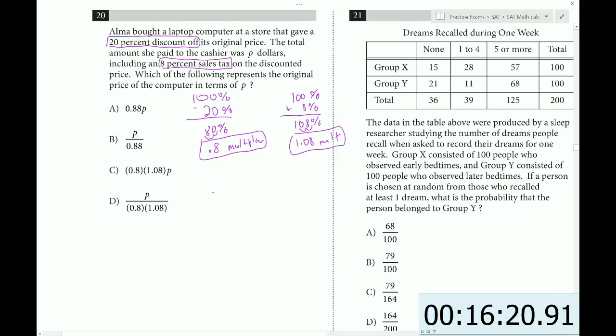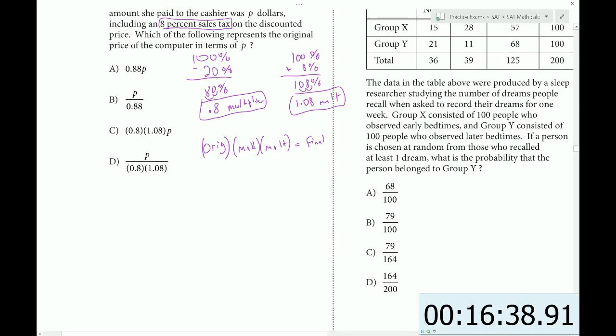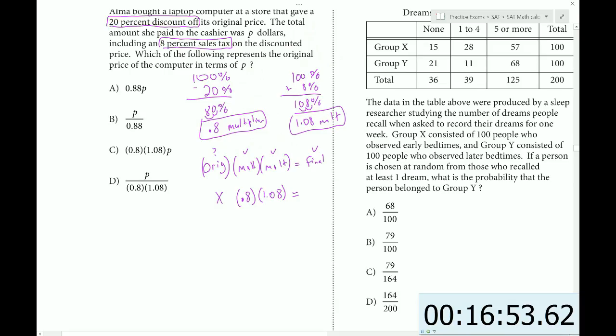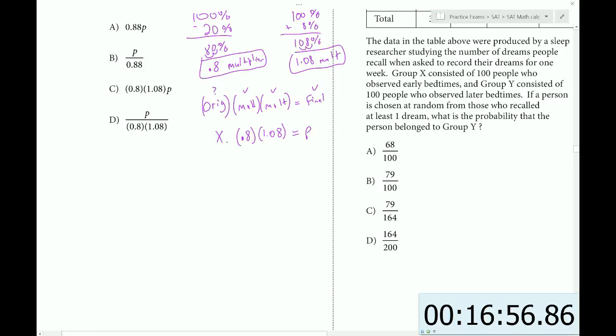Which of the following represents the original price? So to use the multipliers, we need a formula. We do the original price times the multiplier. In this case, we have two multipliers. So we'll put both of them. And that's going to equal the final price. So now if you notice, we're looking for the original. We know both multipliers and the final. So we just put them in. So we have, this can be X. Here we'll put 0.8. Here we'll put 1.08. And here we'll have the final price, which is P dollars. And we want to find X. So we have to divide. Divide by 0.8 and also 1.08. Do that to both sides. And these will cancel. And we're left with X = P / (0.8 × 1.08), which is answer choice D.